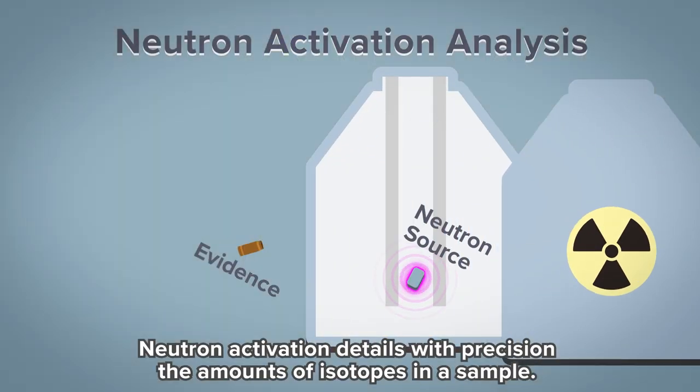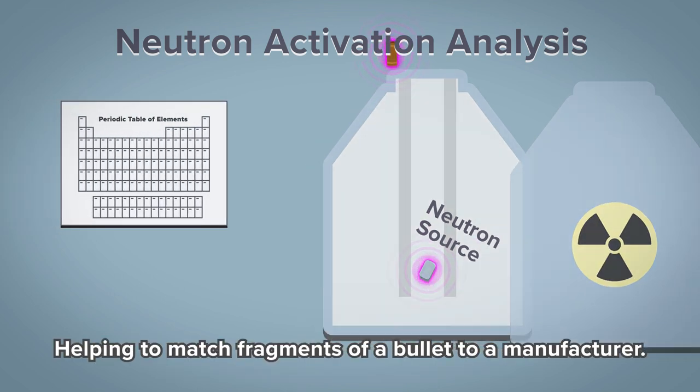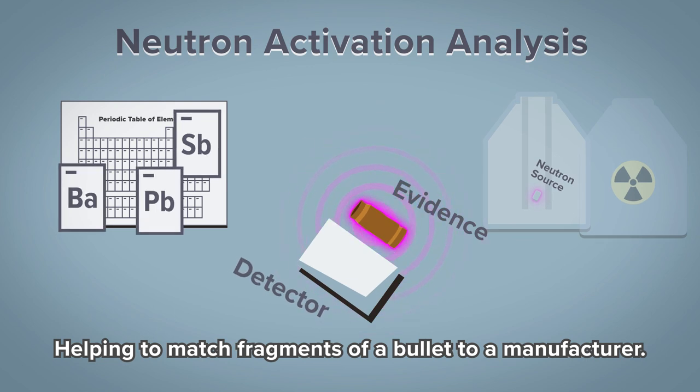Neutron activation details with precision the amounts of isotopes in a sample, helping to match fragments of a bullet to a manufacturer.